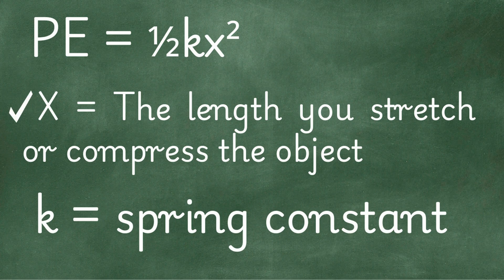The X is how far you stretch or compress the object. The letter K represents the spring constant. The spring constant is a measure of the amount of force needed to stretch or compress an object a certain distance.